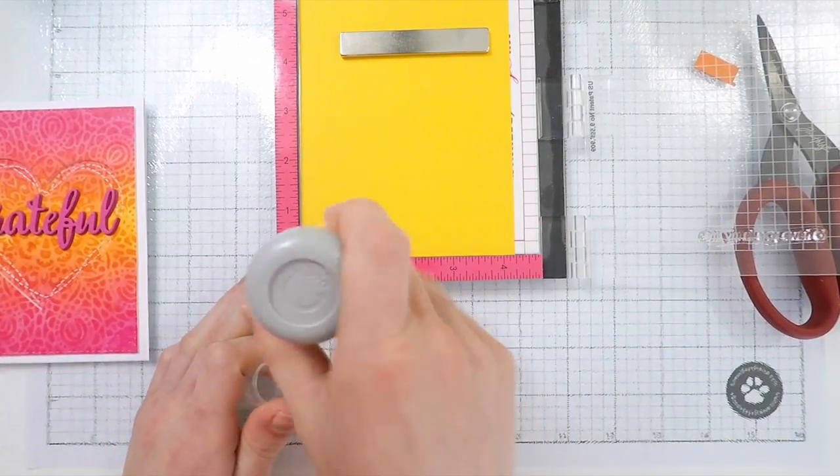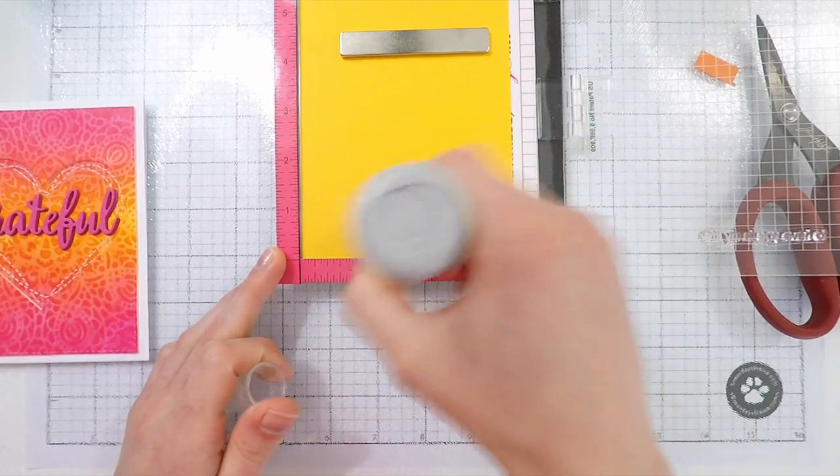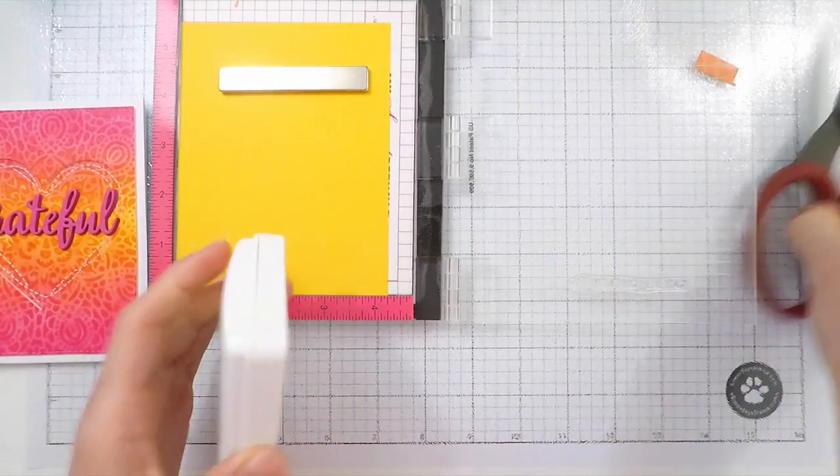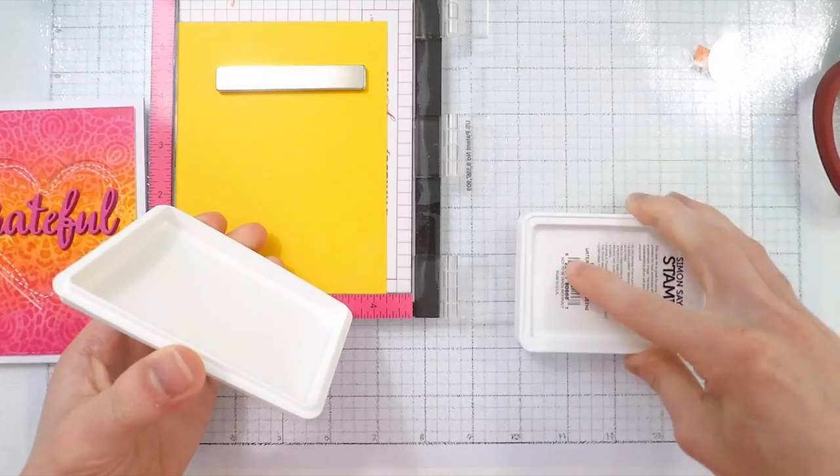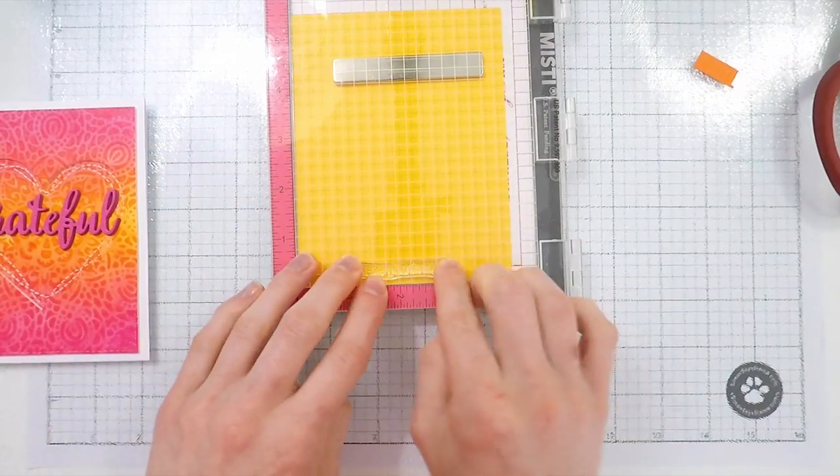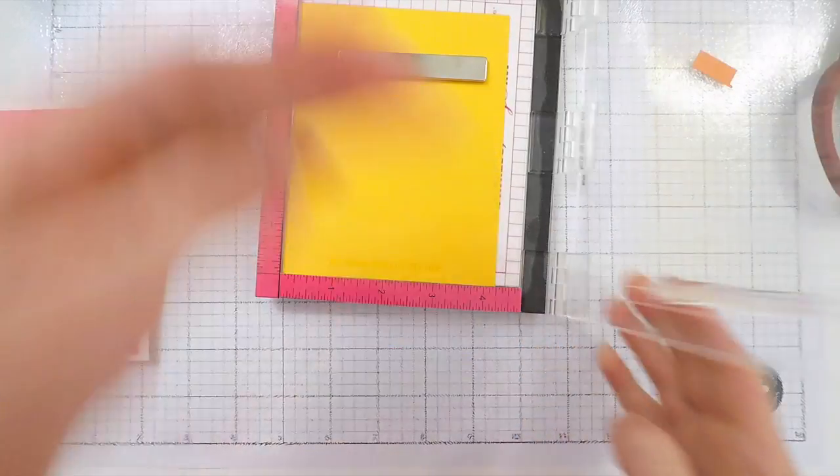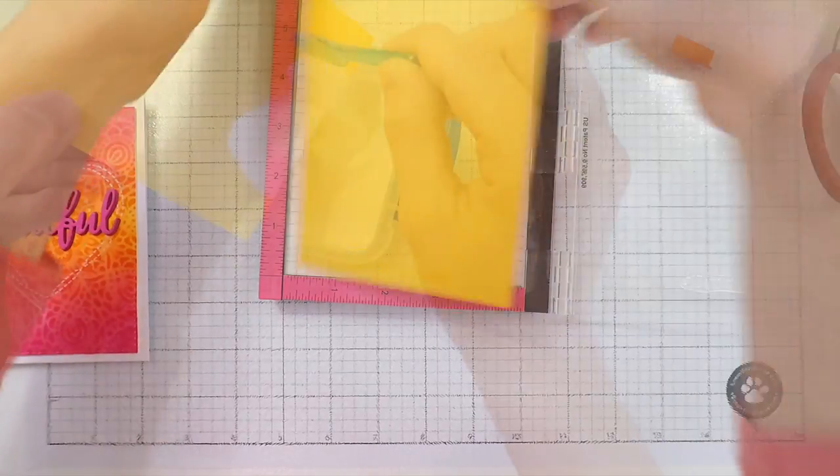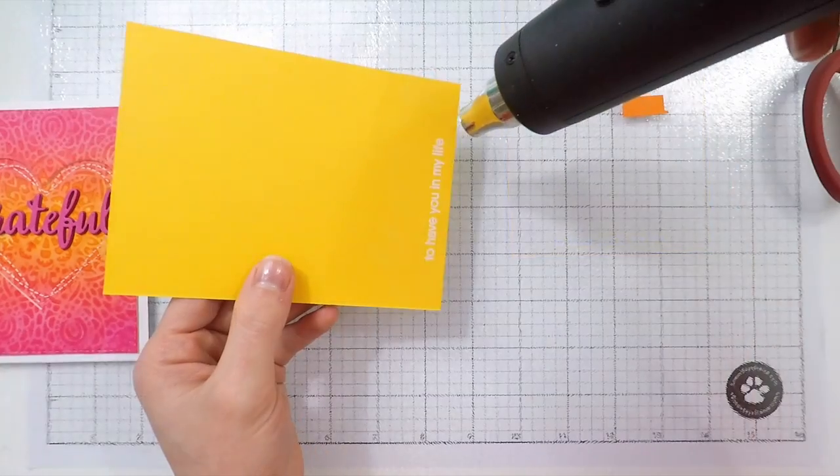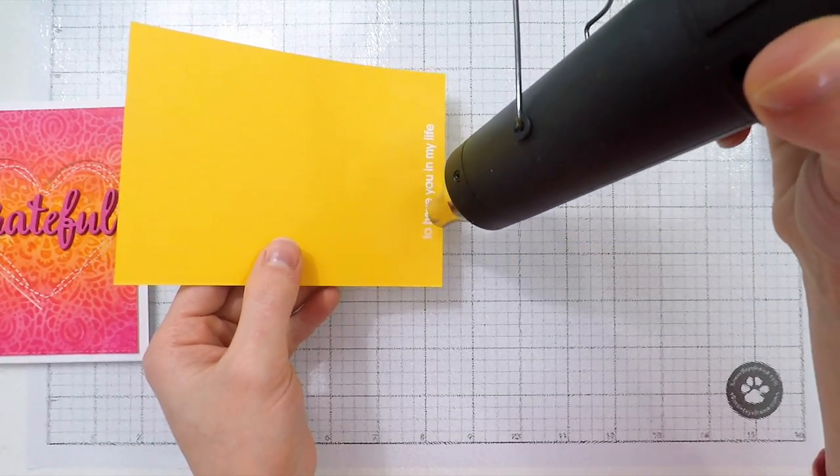Next I'm going to take some yellow cardstock which also matches the colors in my ink blending and I'm going to prep it with my EK Success powder tool so I can do some heat embossing with a sentiment stamp set that matches the grateful word die. I'm stamping the sentiment in some clear embossing ink and then I'm going to use some white superfine embossing powder from Ranger to sprinkle that over top of my stamped sentiment. After I added the embossing powder, I used my heat gun to set it and that creates a nice dimensional effect on this piece of yellow cardstock.